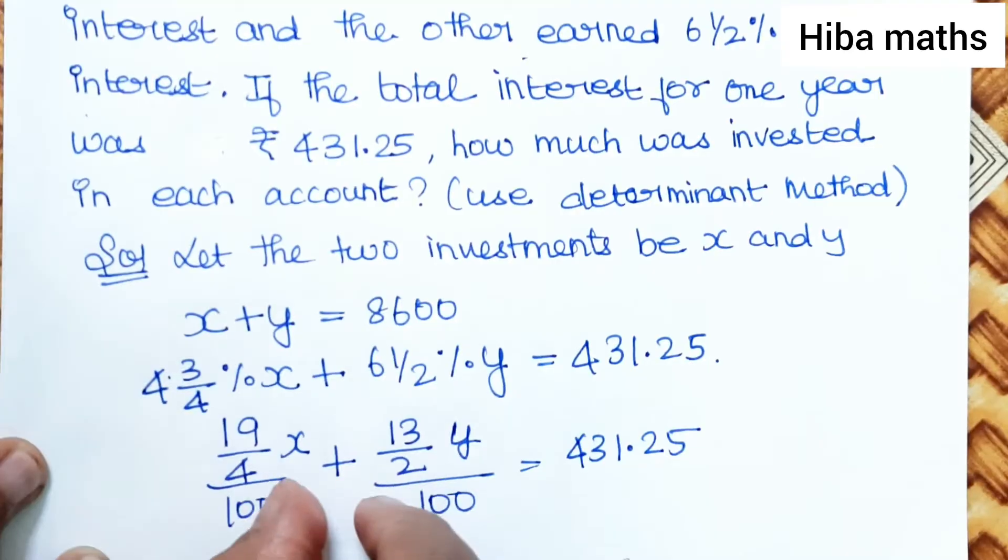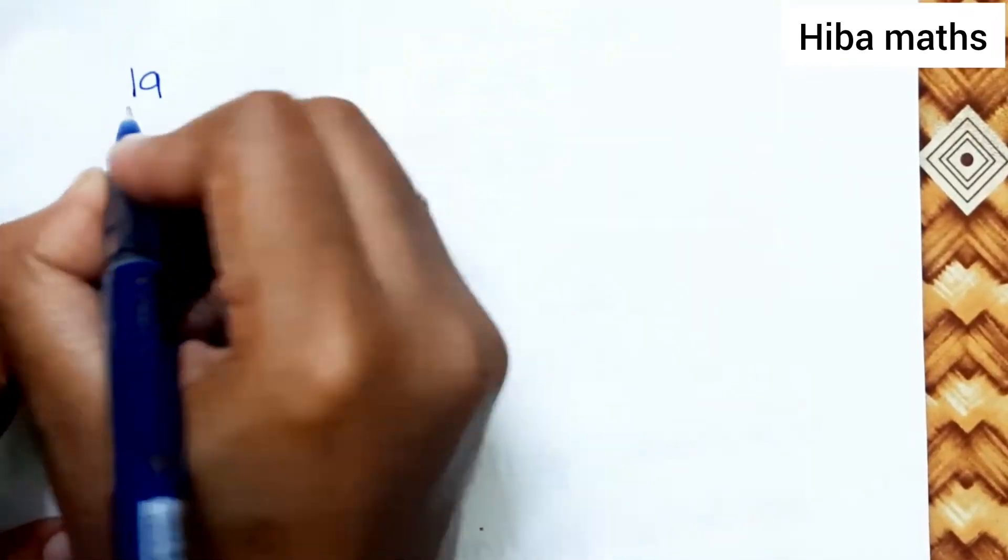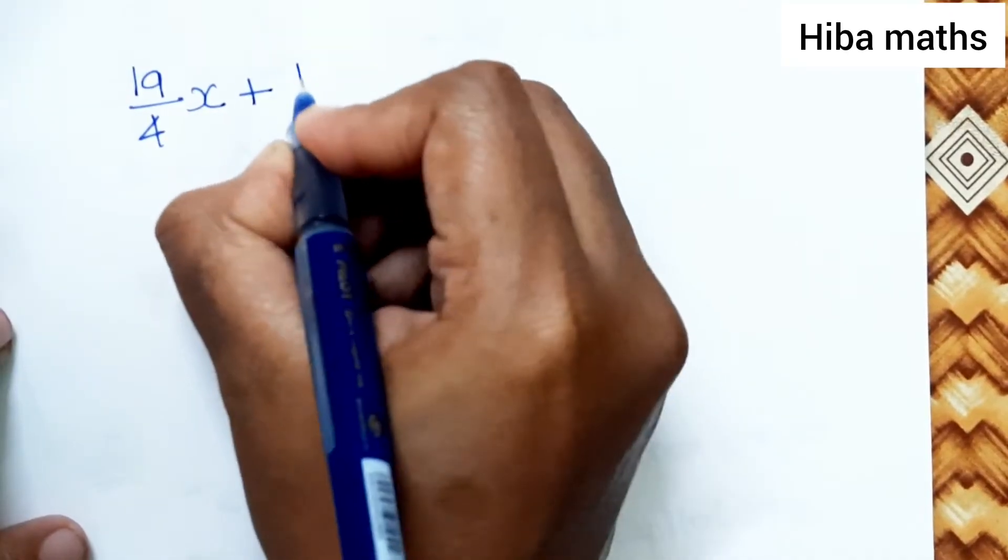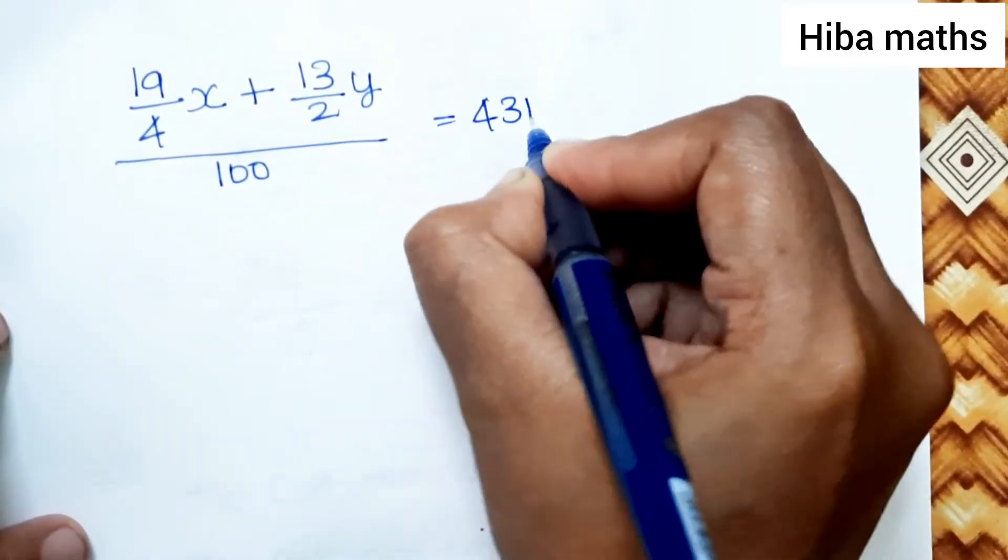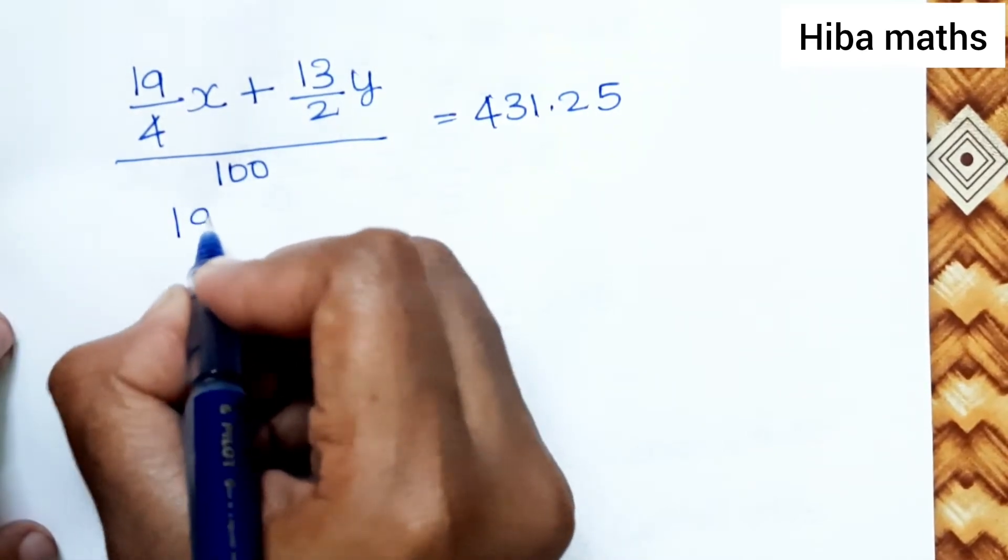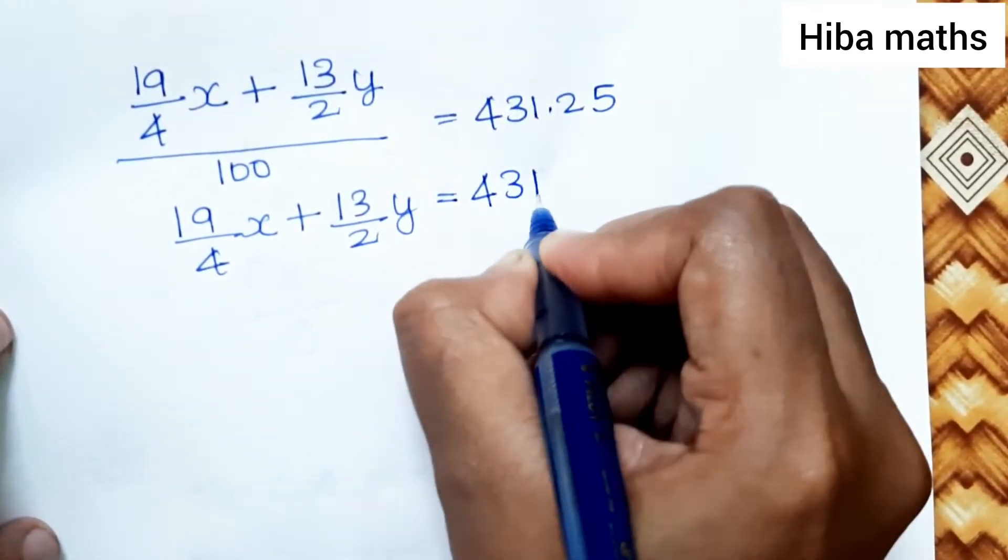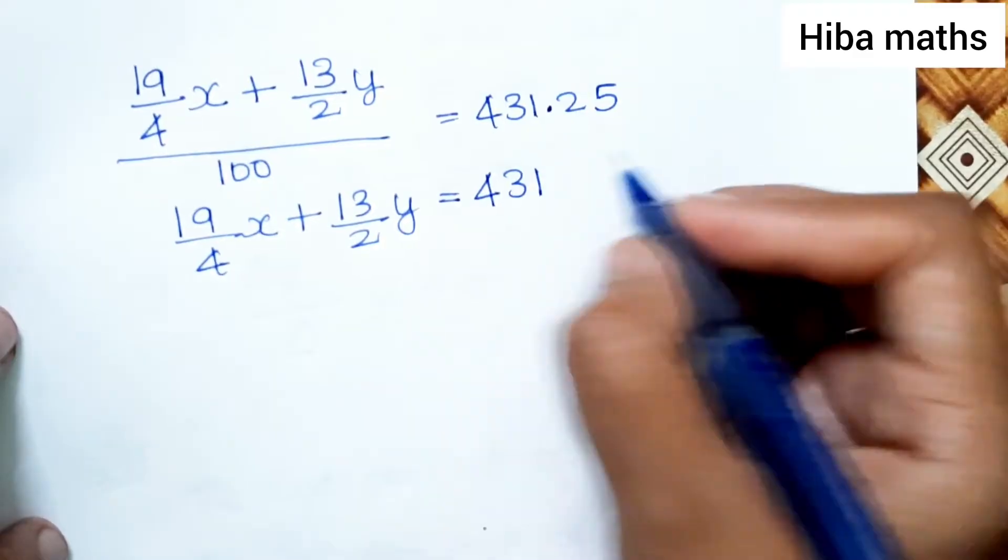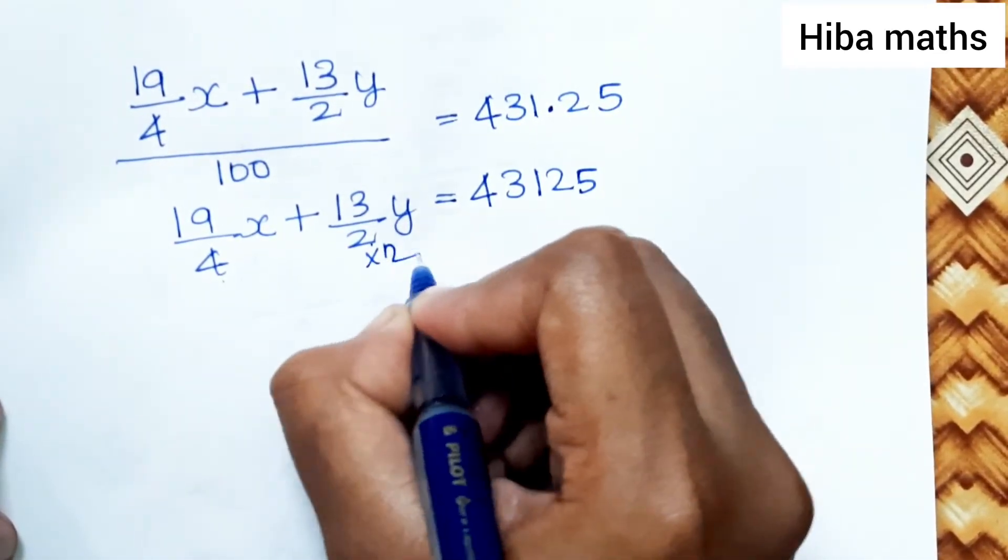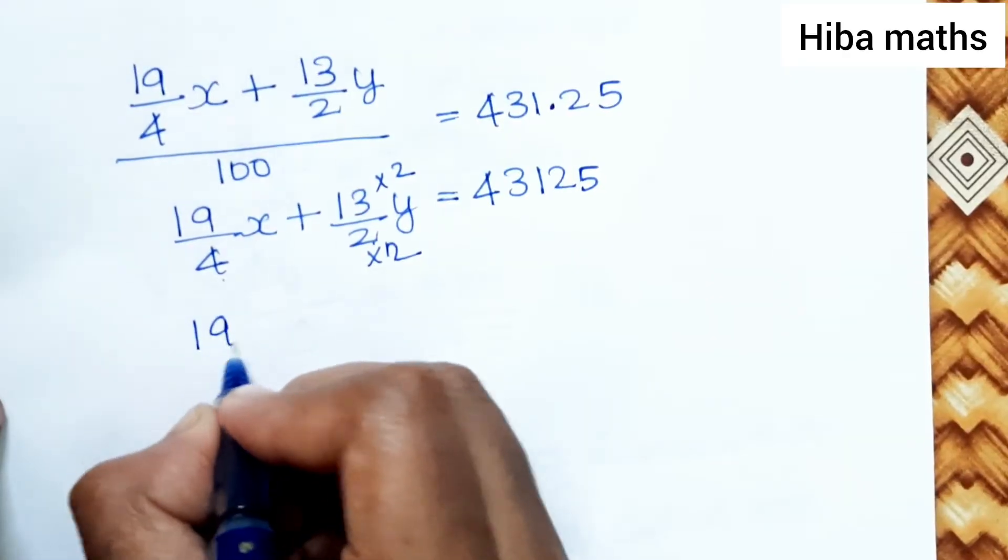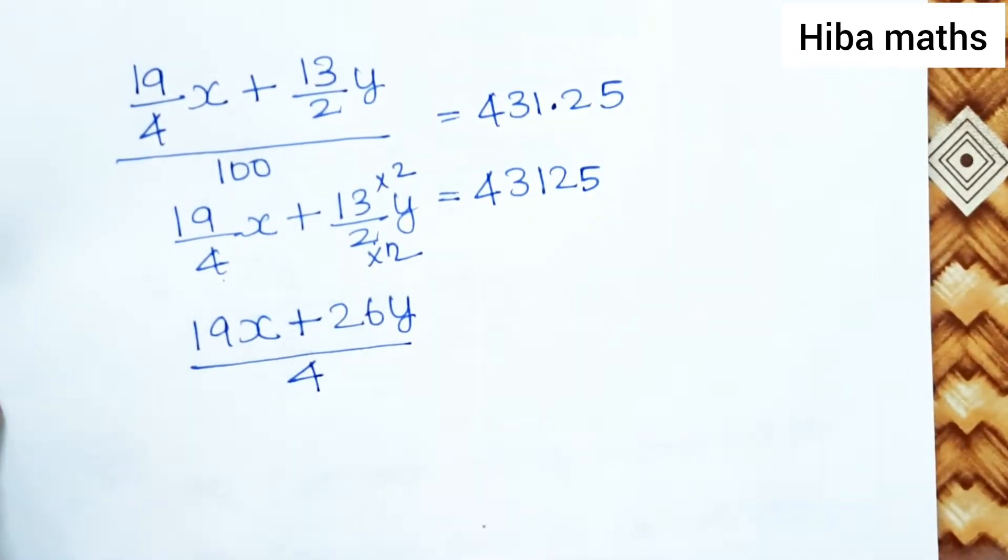Multiplying by 100 to eliminate the denominator: 19/4 X plus 13/2 Y equals 43125. Converting to common denominator: 19/4 X plus 26/4 Y equals 43125.